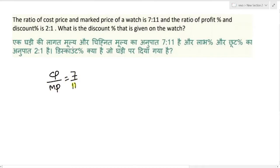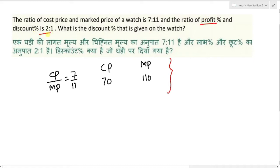यह ratio terms में है, तो exact value नहीं पता। Assume कर लो कि cost price लिया है 70 और mark price लिया है 110। यहां पर एक और information given है कि profit percentage और discount percentage का ratio 2:1 है।